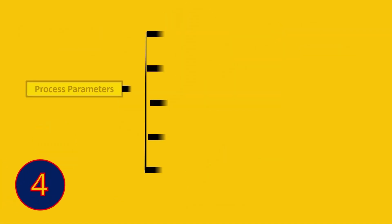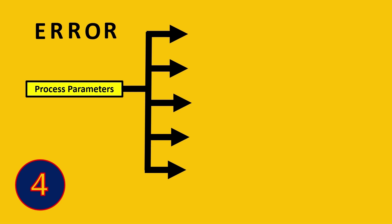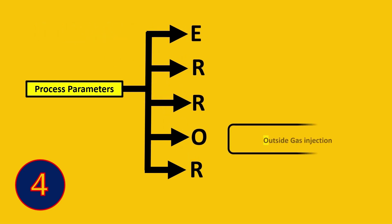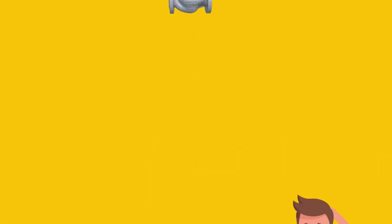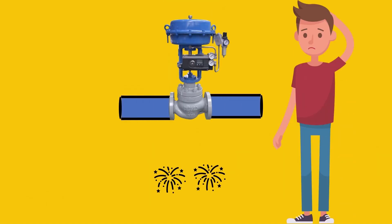The next final thing for process parameters - as we said ERROR, now we have O which stands for outside gas injection. This is a very simple method where basically you have a valve and a pressure drop happening, and you have the bubbles which are bursting which is the troublesome thing.